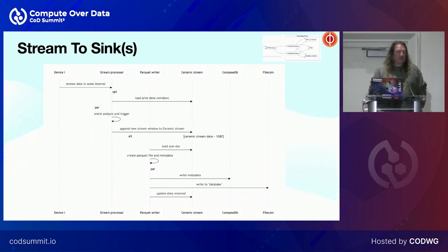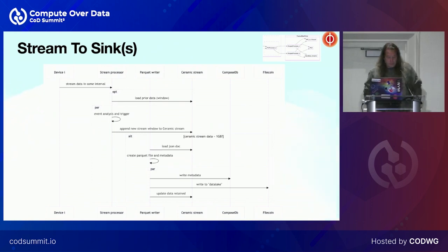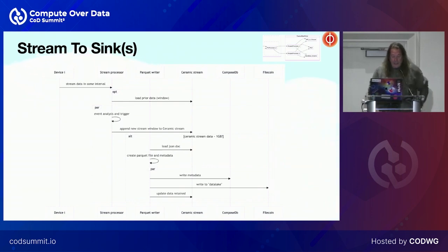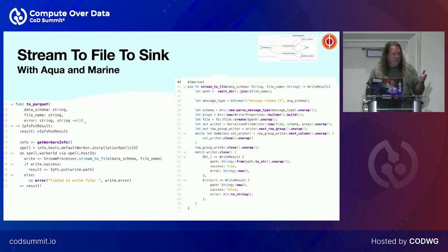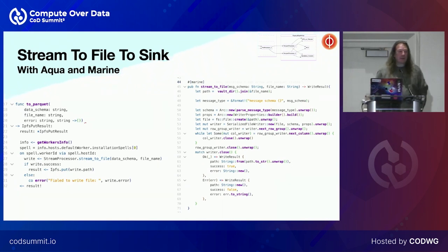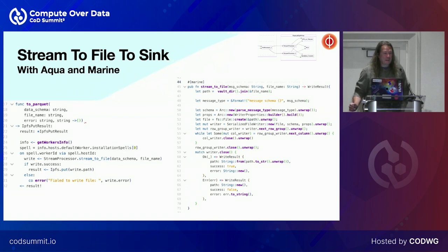We've done a bunch of data processing — we have streams, we captured them, we did something with them, and now it's time to write to file. One way to do this is to write to Parquet, and Apache Arrow is a complete solution for this. I managed to compile Apache Arrow Polars — basically a pandas-type library in Rust — and the Parquet crate as well. If anybody's interested in how to get this into WebAssembly, it's not entirely straightforward but not super difficult. We also have DuckDB coming.